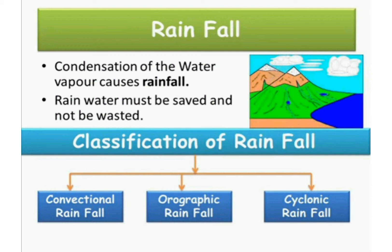The classification of rainfall is of three types. They are convectional rainfall, orographic rainfall and cyclonic rainfall. Let us learn the spelling: C-O-N-V-E-C-T-I-O-N-A-L, convectional rainfall. O-R-O-G-R-A-P-H-I-C, orographic rainfall. C-Y-C-L-O-N-I-C, cyclonic rainfall. The three types of rainfall are convectional rainfall, orographic rainfall and cyclonic rainfall.